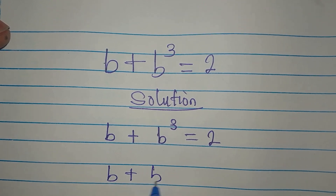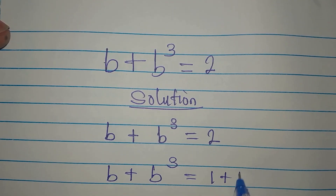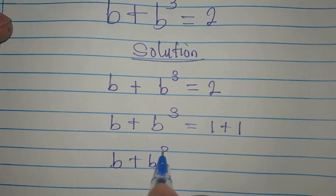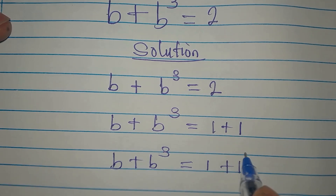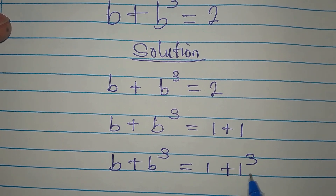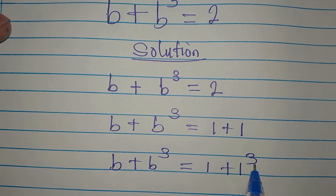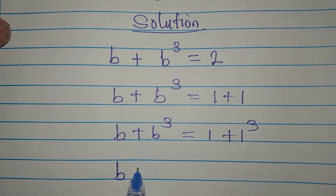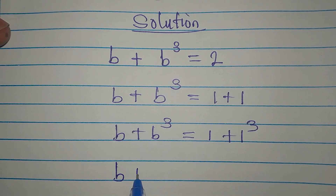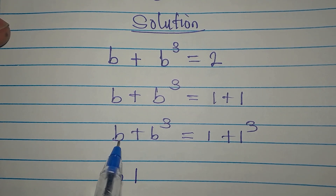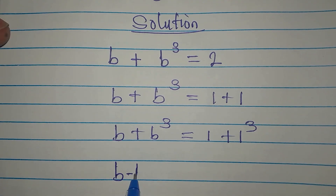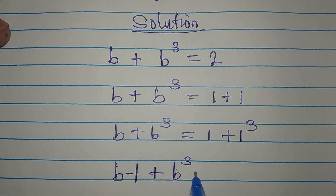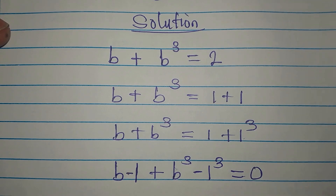We have b plus b to the power of 3 equals 1 plus 1 — that is understandable. What if I write b plus b to the power of 3 equals 1 plus 1 to the power of 3? So that's what we have. The right side, 1 plus 1 to the power of 3, still gives us 2, so we have not changed anything. Now we are going to rearrange: we put b and this 1 together to get b minus 1, then b to the power of 3 minus 1 to the power of 3, and we equate everything to 0.